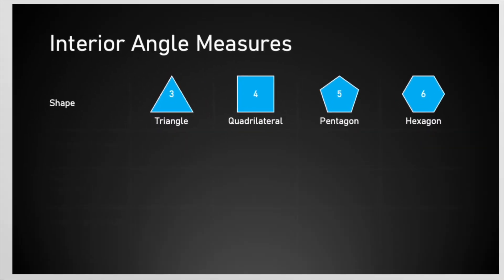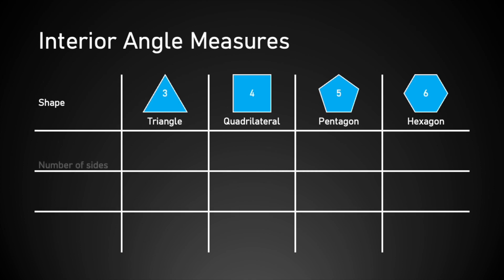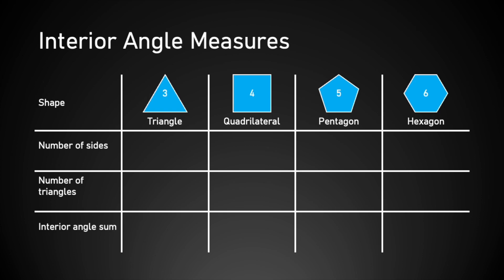Now that we've defined some terms, let's get into some theorems. We're going to build a table where we compare the number of sides, number of triangles, and interior angle sum for these four polygons. The number of sides should be easy. I can make a triangle out of just one triangle — I realize that's a weird thing to say, but it'll make sense in just a moment. For now, just put one there. Hopefully you remember that the interior angles of a triangle add up to 180 degrees.